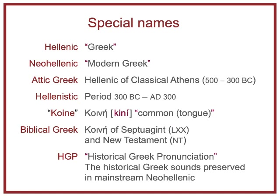Some names that will help us: Hellenic means Greek. Neo-Hellenic is the official name of today's modern Greek. Attic Greek is the Hellenic of classical Athens. Hellenistic refers to the period 300 BC to AD 300. Kini—not koine or kune, but kini—means common tongue. Biblical Greek refers to the Kini of the Septuagint and of the New Testament. HGP, Historical Greek Pronunciation, refers to the historical Greek sounds preserved in mainstream Neo-Hellenic.